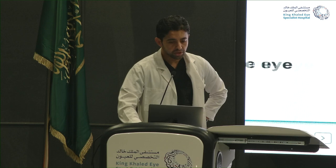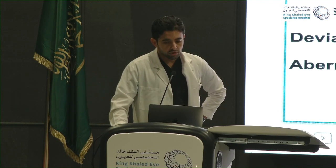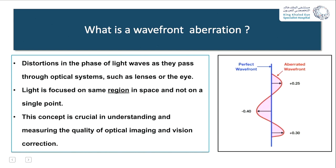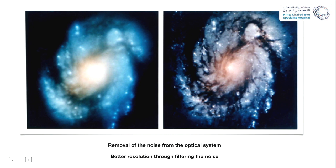Wavefront aberration is the difference between the ideal perfect waveform and the actual real waveform of the eye. This gives an idea of the total distortion in the eye and deviation of the light rays causing images or objects to blur. An aberrometer is a diagnostic device that measures the refractive aberrations of the eye. When we treat these aberrations, we remove the noise from the optical system and get a better resolution — somewhat like noise cancelling with earphones.